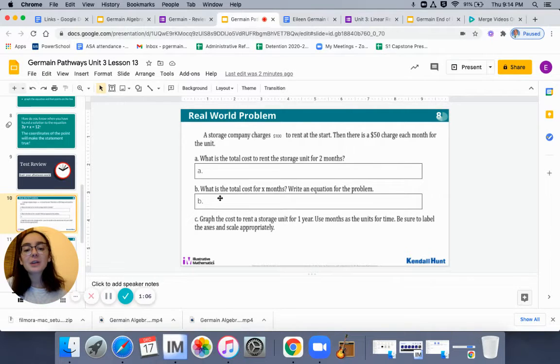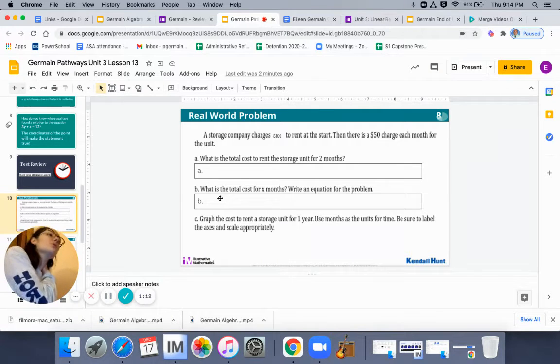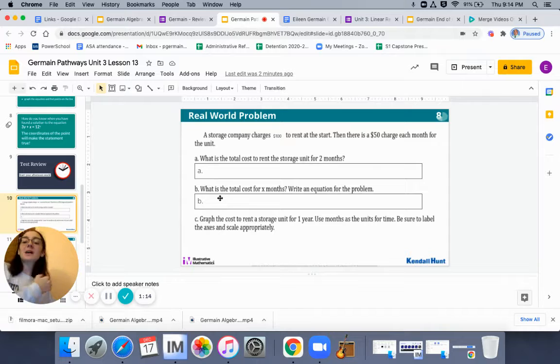Number two, letter B here says, what is the total cost in X months? Write an equation for the problem. So you need to write an equation that's represented by this problem in the slope intercept, or Y equals MX plus B form. So you can pause the video right now to do these two parts and play it when you're ready.